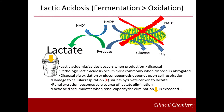Lactic acidosis results when lactate production exceeds disposal. The primary routes of disposal are oxidation, gluconeogenesis, and renal excretion. The liver accounts for the largest component of lactate extraction from the blood. The kidney metabolizes a substantial amount of lactate and excretes a small fraction under normal circumstances. Renal excretion increases when circulating lactate reaches 6 to 10 millimolar. Oxidation and gluconeogenesis both require a functional respiratory apparatus. Thus, any pathologic process that impairs respiration or mitochondrial function will have an impact on the removal of lactate. Accumulation of lactate beyond the excretory capacity of the kidney results in lactic acidemia.